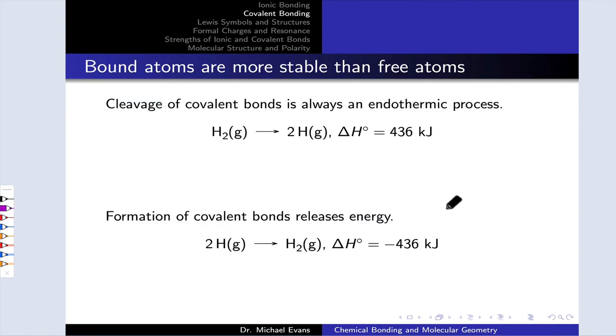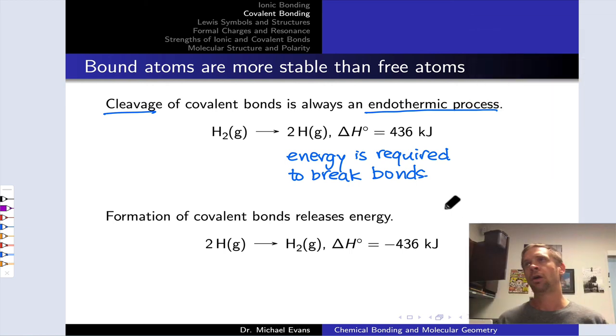Just as we saw in the case of ionic bonds, an energy input is required to cleave covalent bonds. In other words, cleavage of covalent bonds is always an endothermic process. It takes energy to break bonds. So for example, it takes 436 kilojoules to cleave an H2 molecule into two separate hydrogen atoms in the gas phase. On the flip side, if we reverse this process or think about it backwards, the formation of covalent bonds is always exothermic. Energy is always released. Naturally, when I take two hydrogen atoms separated in the gas phase and I allow them to approach one another to form an H2 molecule in the gas phase, the enthalpy change associated with that is negative 436 kilojoules per mole.